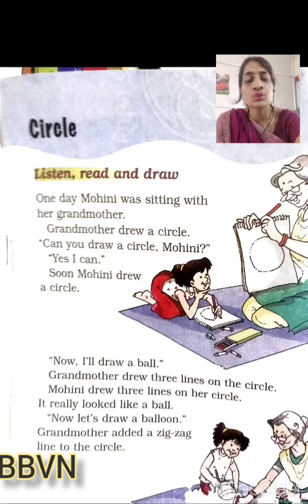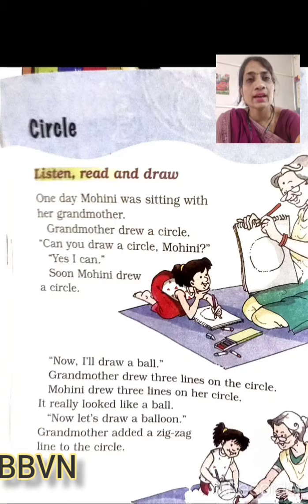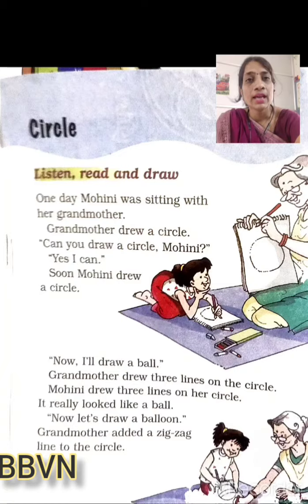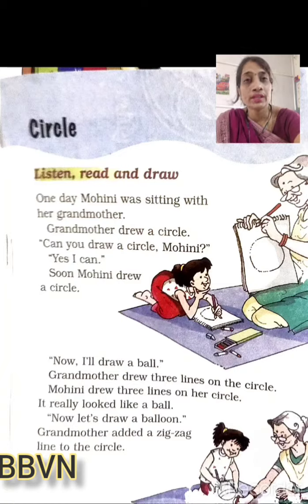Soon Mohini drew a circle. Toh jald hi Mohini ne circle bana diya. M-O-H-I-N-I Mohini. S-I-T-I-N-G sitting. W-I-T-H with. G-R-A-N-D-M-O-T-H-E-R grandmother. S-O-O-N soon. D-R-E-W drew. So Mohini ne sundar sa circle bana diya.